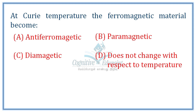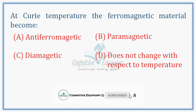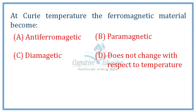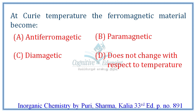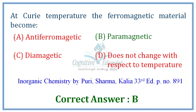Next question on magnetic properties — a simple school-level question: at Curie temperature, a ferromagnetic material becomes what? At a certain temperature, the magnetic property changes; that is called the Curie temperature. Above the Curie temperature, a ferromagnetic material becomes paramagnetic. The correct answer is: at Curie temperature, ferromagnetic becomes paramagnetic. This unit covers coordination chemistry and magnetic properties questions.